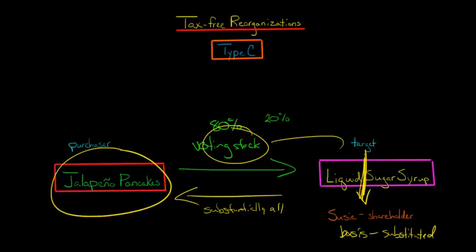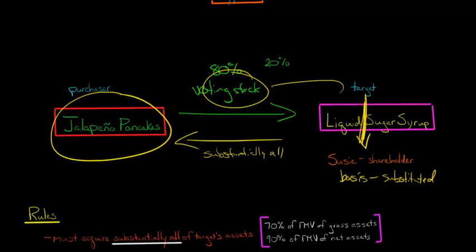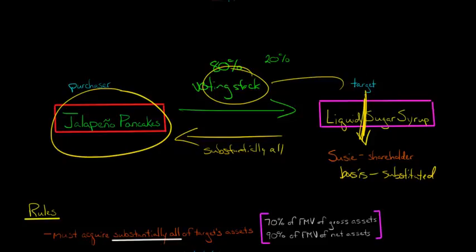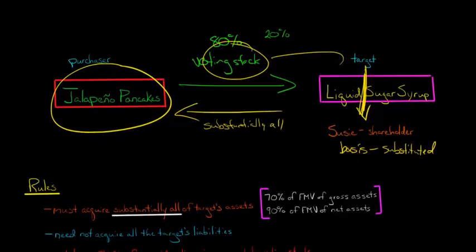Now I want to talk about some of the rules. When we say substantially all of the target's assets, what we mean is at least 70% of the fair market value of the gross assets of the target. So whatever Liquid Sugar Syrup's gross assets were, multiply that by 70%, and Jalapeno Pancakes has to acquire at least that percentage. And also at least 90% of the fair market value of the net assets. If they don't acquire substantially all of the assets, then it's not going to qualify as a Type-C tax-free reorganization.